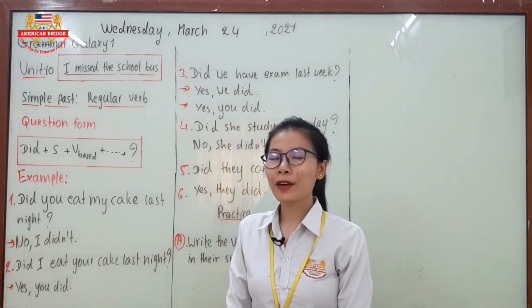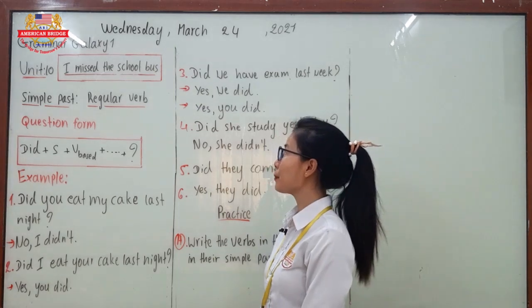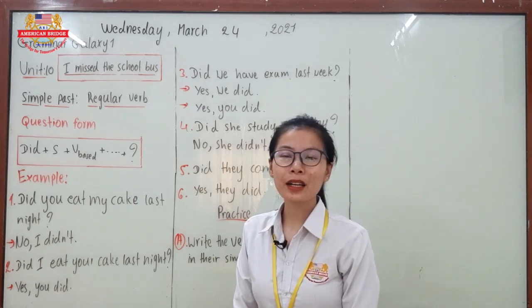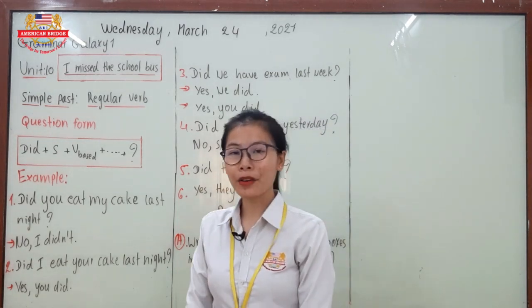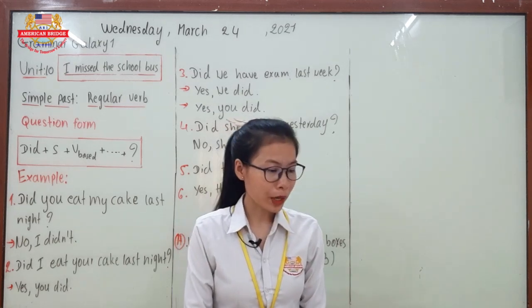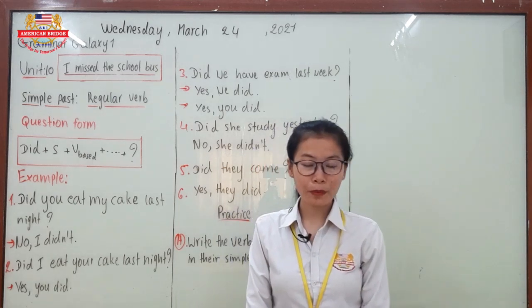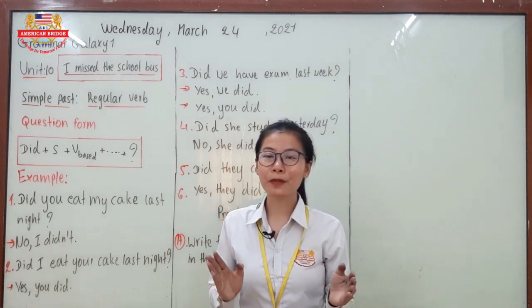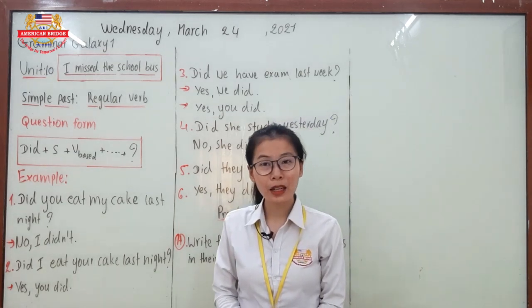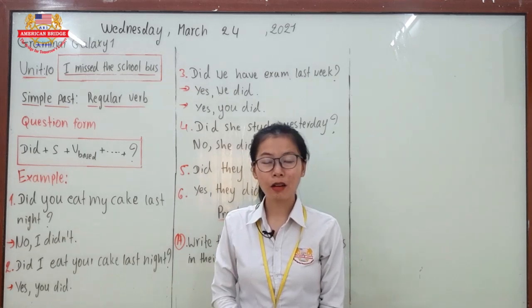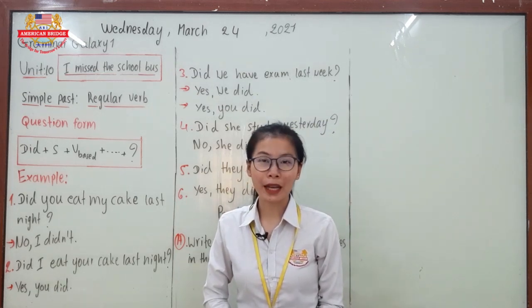According to our schedule, today you are going to learn about Grammar Galaxy One, Unit 10 — 'I missed the school bus.' You have already learned about the simple past tense. We have regular verbs, which always add '-ed.' We use the simple past to talk about something that happened in the past.